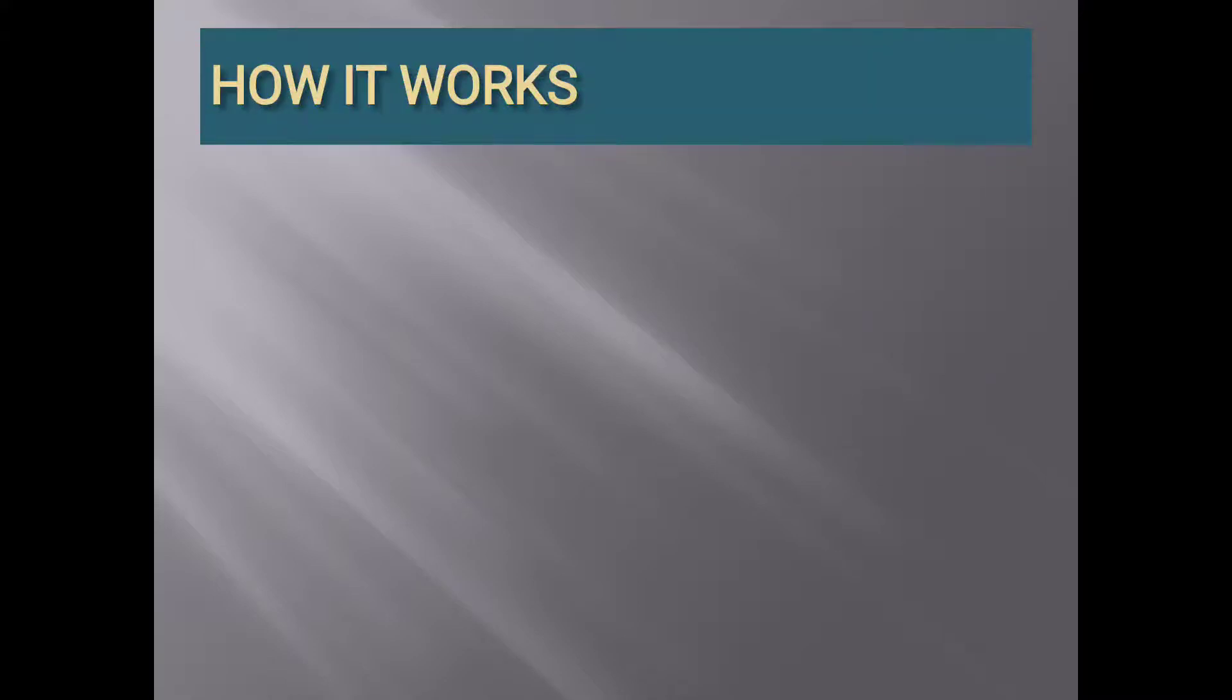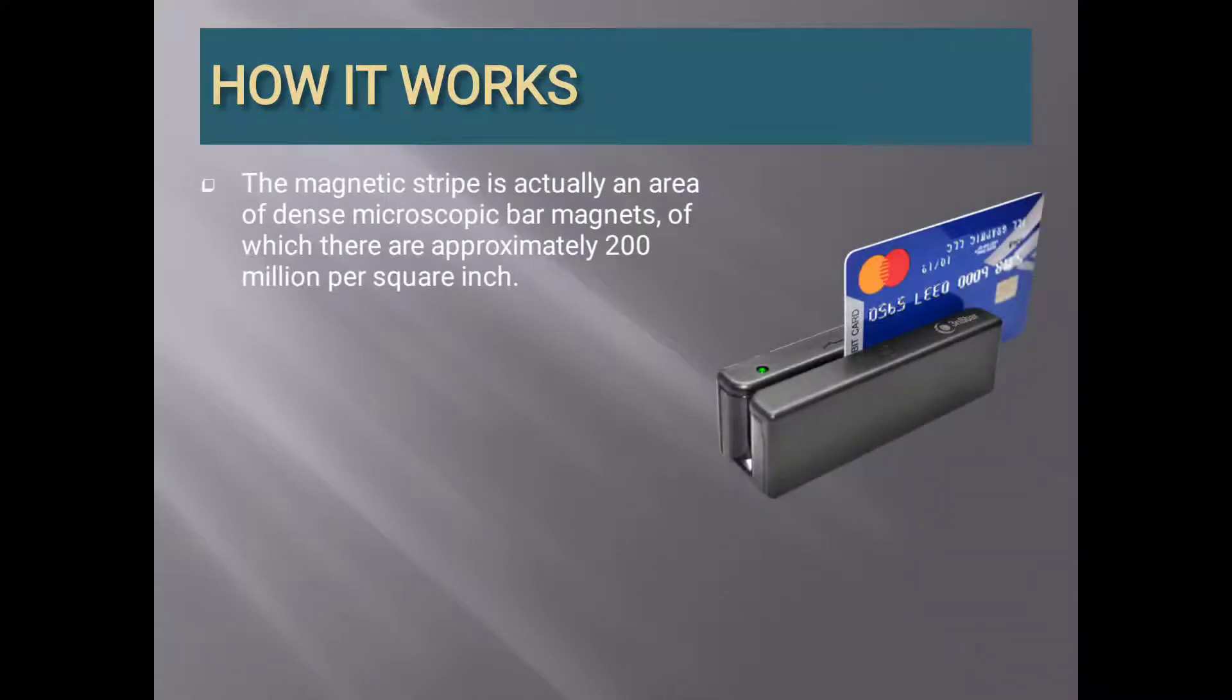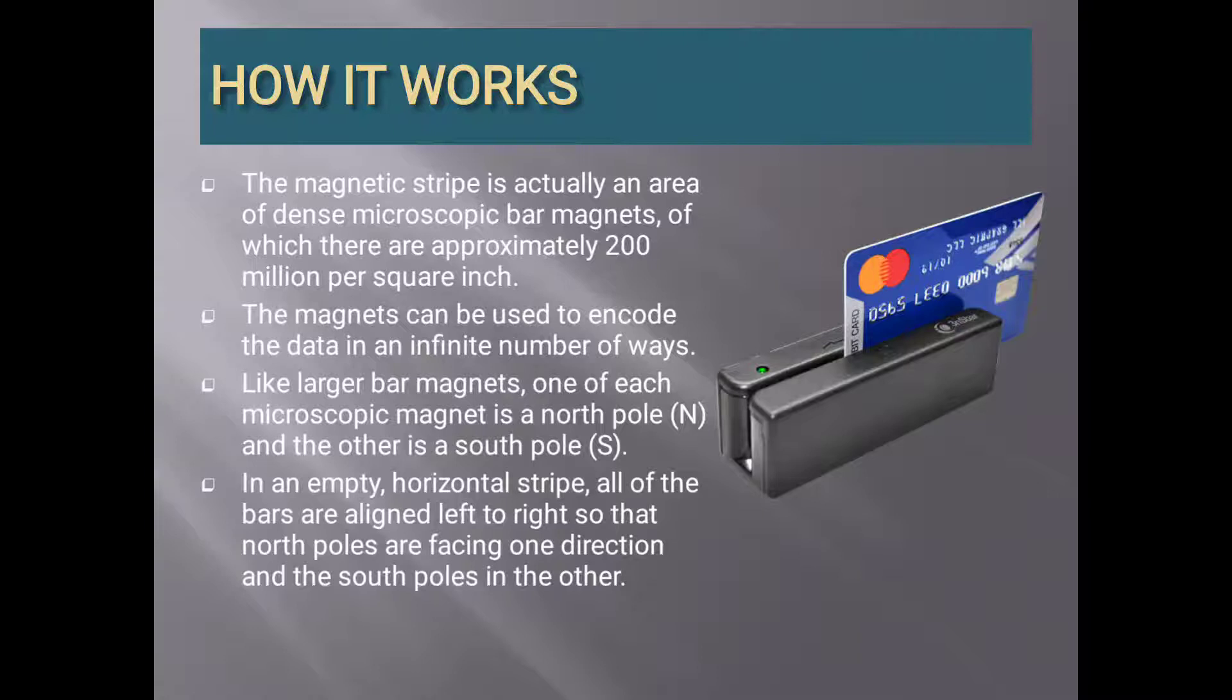Further is how it works. The magnetic stripe is actually an area of tensed microscopic bar magnets, of which they are approximately 200 million per square inch. This means that the strip on the card is made up of 200 million tiny magnets. These magnets can be used to encode the data in an infinite number of ways. Like larger bar magnets, one of each microscopic magnet is a north pole, and the other is a south pole. In an empty horizontal strip, all of the bars are aligned left to right, so that the north poles are facing one direction, and the south poles are in the other direction.